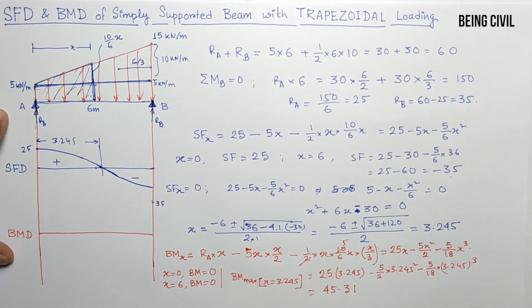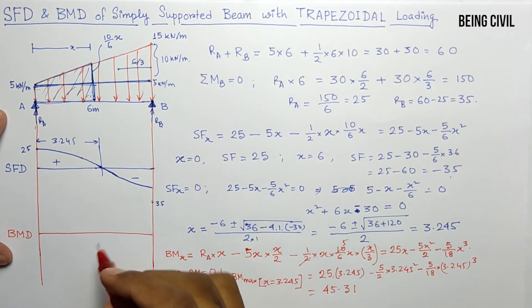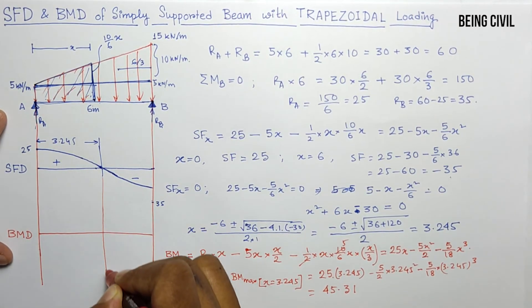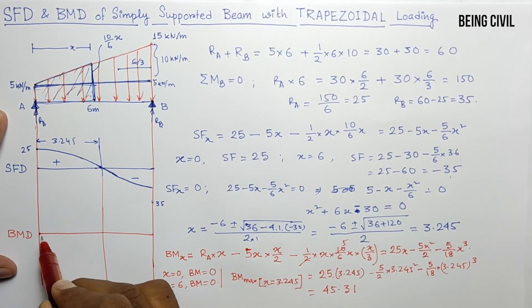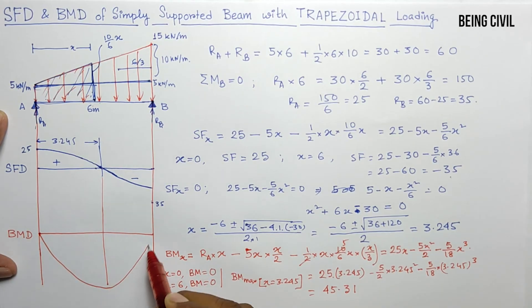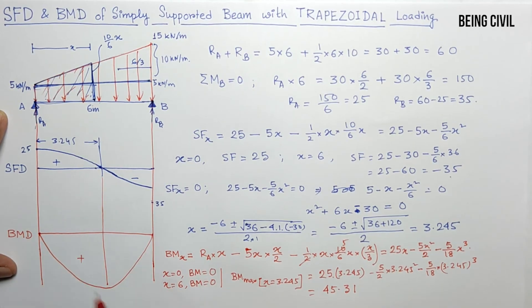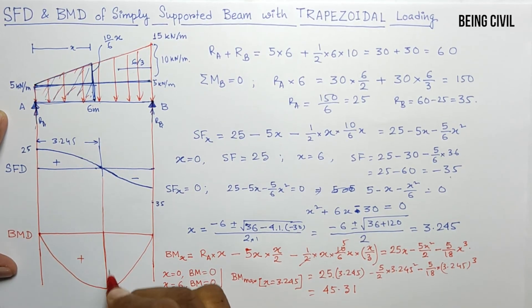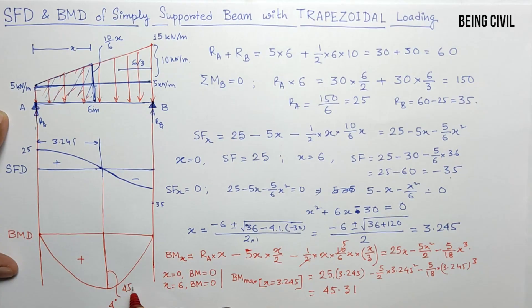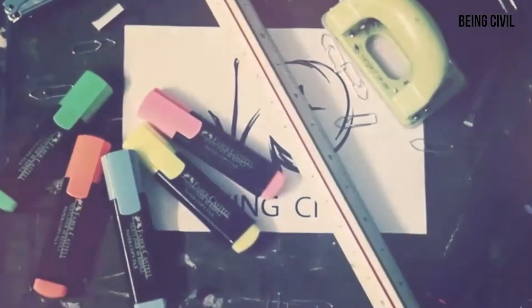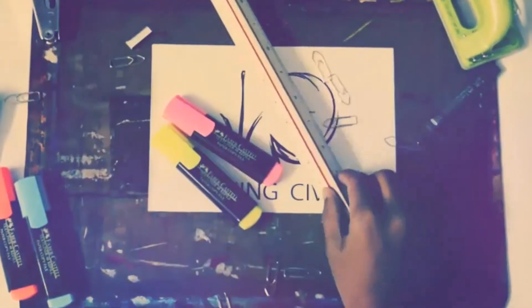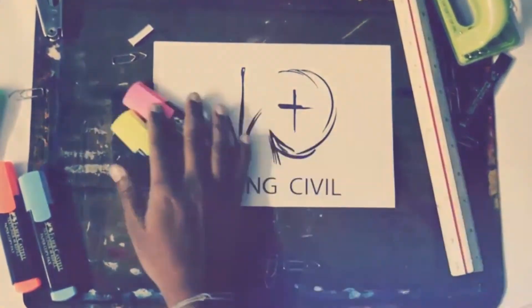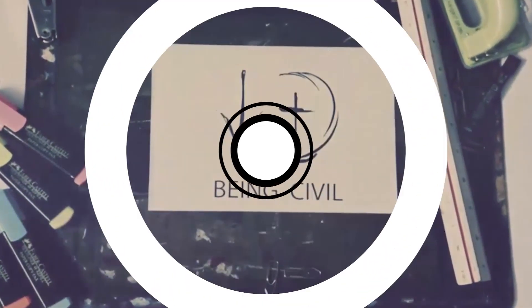The bending moment diagram is a cubic curve, with zero values at both supports and a maximum ordinate of 45.31 kN·m. That's all — hope you liked this video. Give it a thumbs up, share with friends, and see you in the next video.